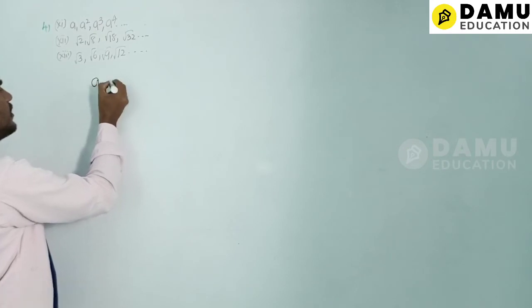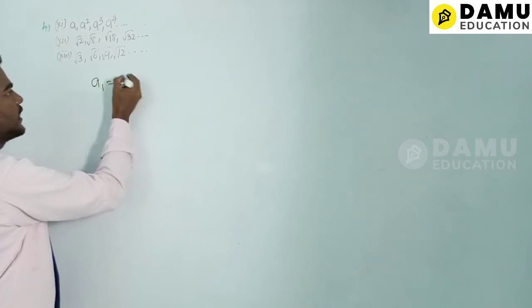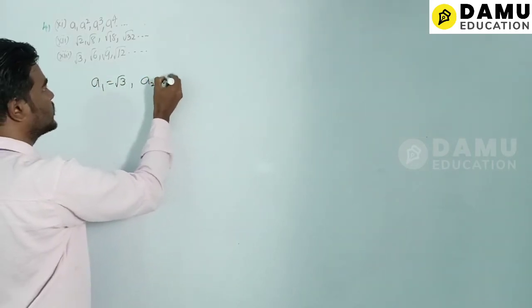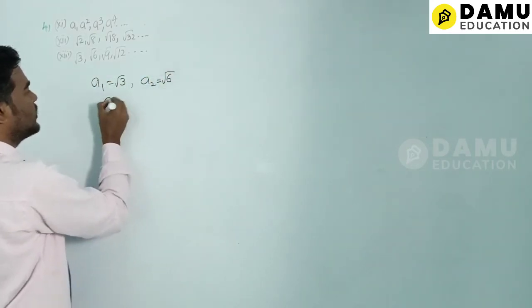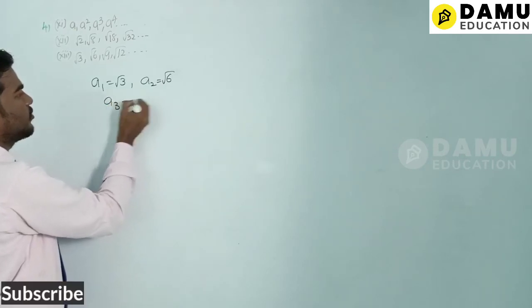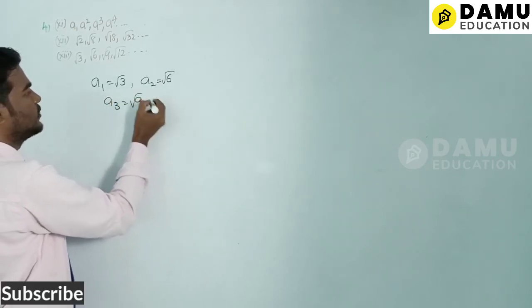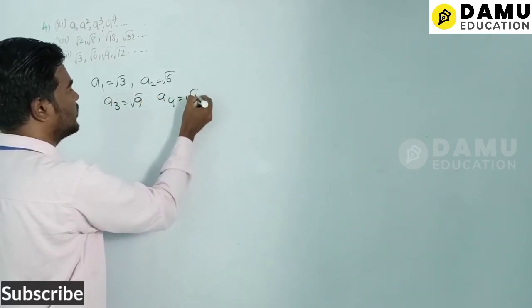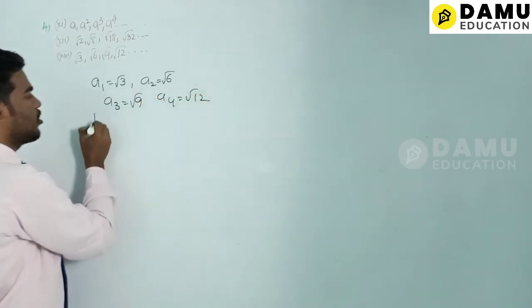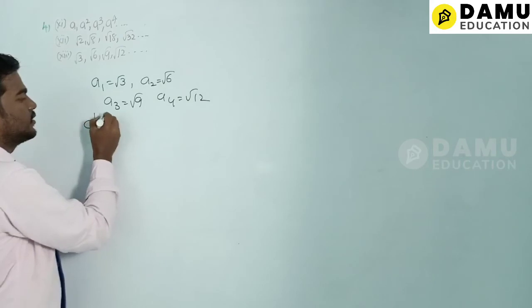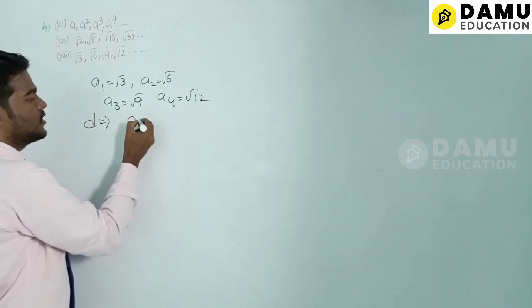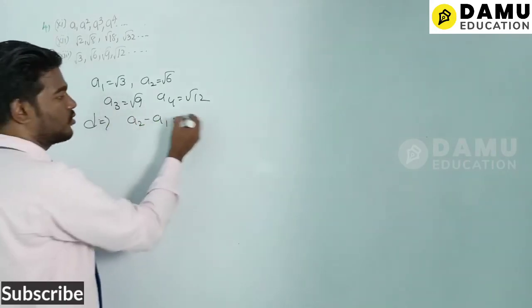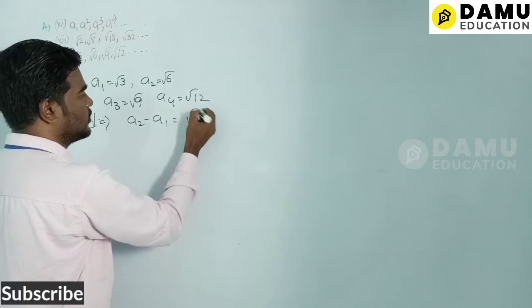For the thirteenth series: a1 = √3, a2 = √6, a3 = √9, a4 = √12. The common difference d = a2 − a1 = √6 − √3.